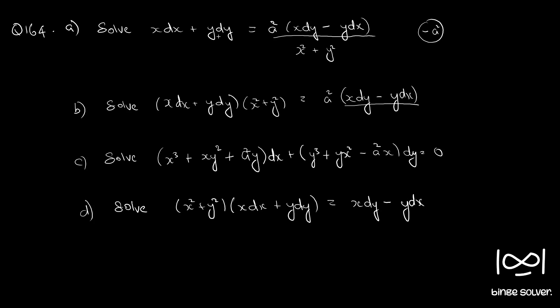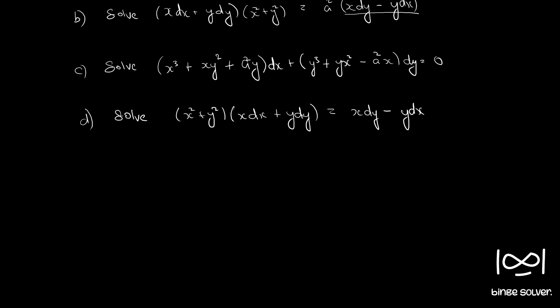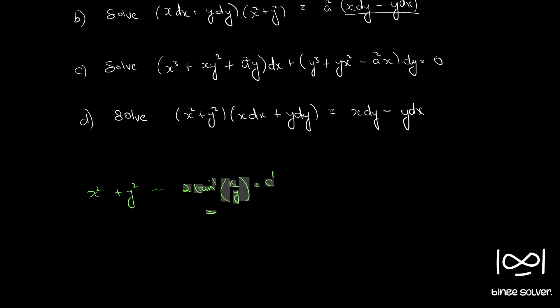There is only that difference. So the answer of question 163 was x squared plus y squared minus 2 tan inverse x by y equal to c dash. For this question, the steps will be the same, just that there will be an addition of A squared. The answer will be x squared plus y squared plus 2 A squared tan inverse x by y plus c. So this is the solution to part A.